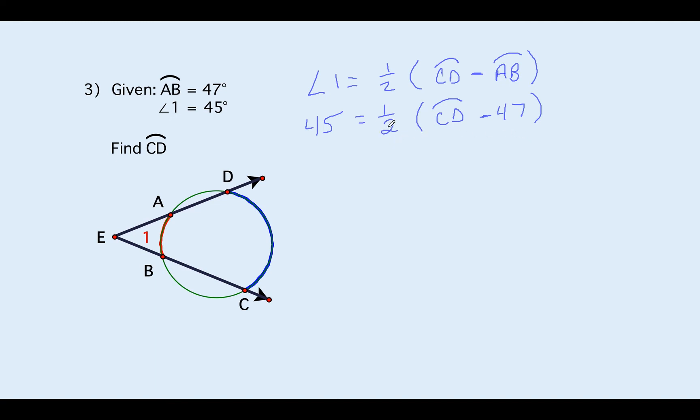For this what we want to do is get rid of this one half first by multiplying both sides by 2. That gets rid of this over here and makes this 90. Now we've got arc CD minus 47 so we're going to add 47 to both sides. So arc CD is 137 degrees. So this is a 137 degree portion of the circle.